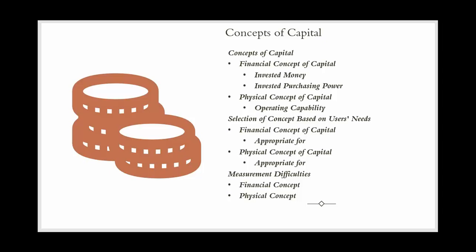The physical concept of capital views capital as the productive capacity of the entity. This concept focuses on the ability of the entity to generate goods and services, often measured by physical units of output such as units produced per day. It is more about maintaining the operational capability of the entity. This perspective considers capital as the entity's ability to sustain its operations and production levels — keeping machinery, equipment, and other physical resources in good working condition.